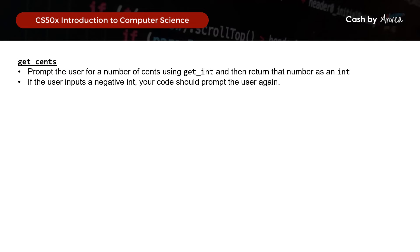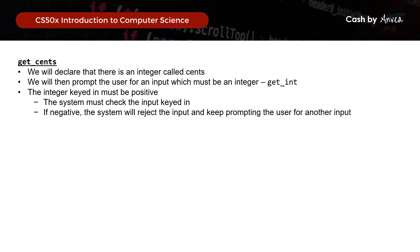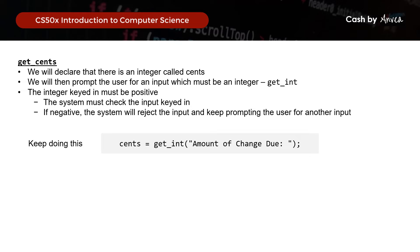For the get_cents function, we will prompt the user for a number of cents owed using get_int, and the number should not be negative. We start by declaring an integer called cents and getting the user to key that in. Since the integer keyed in must be positive, we include a validation rule using a do-while loop: we keep doing cents equals get_int for the amount of change due, while the cents keyed in by the user is less than zero.